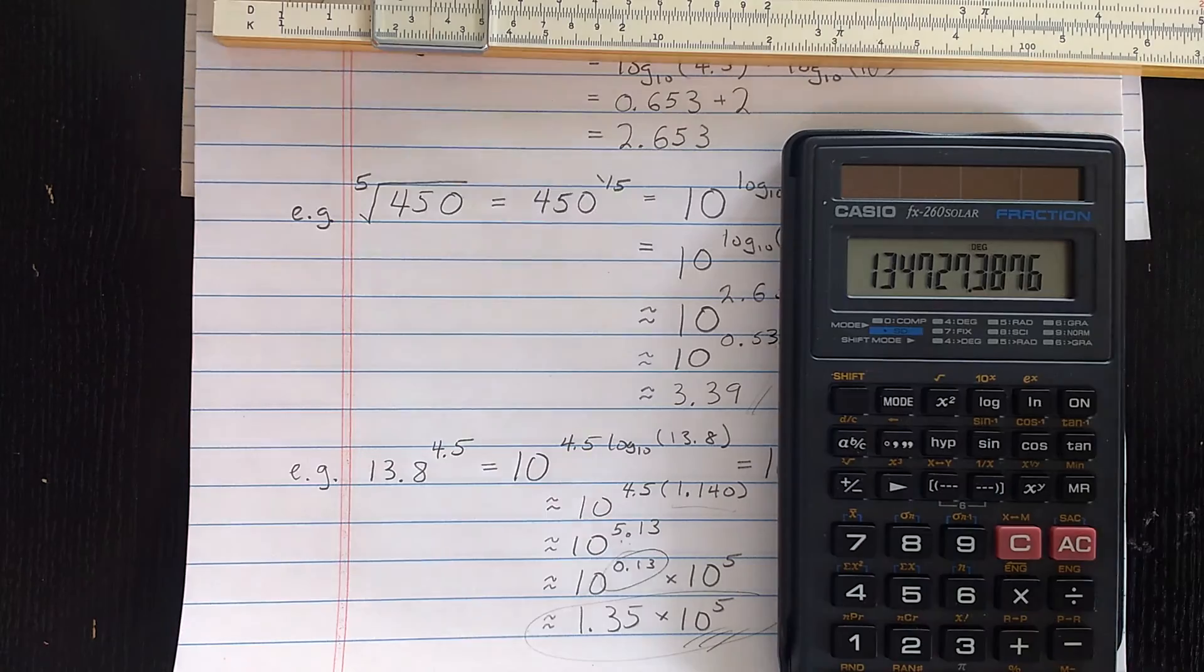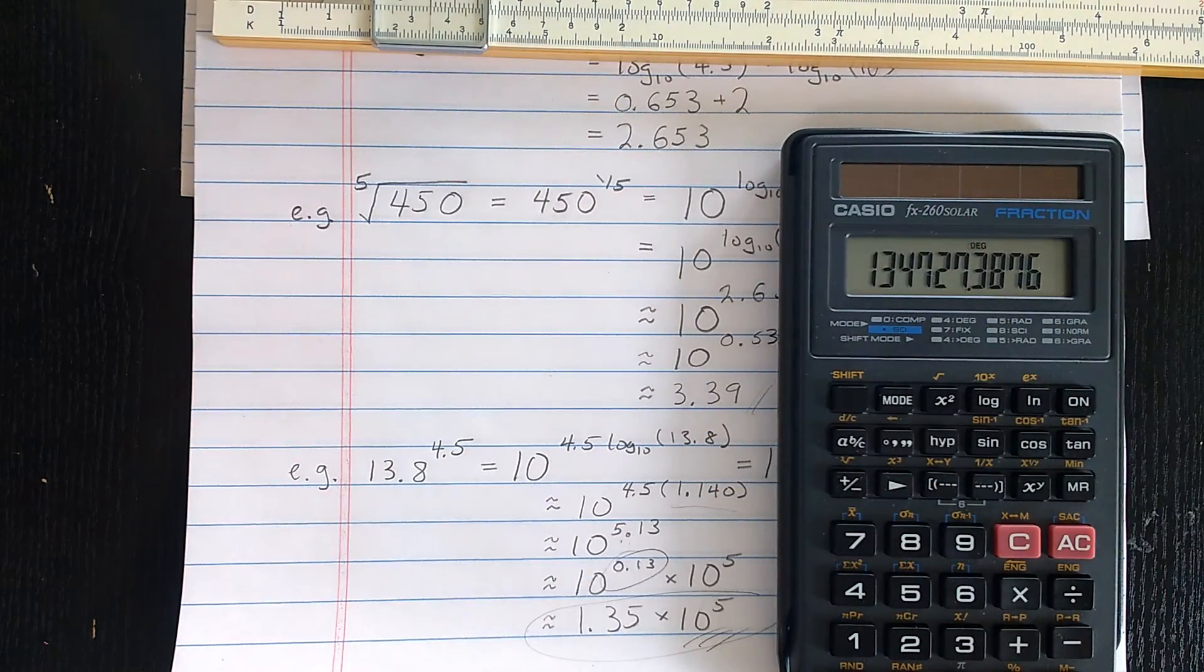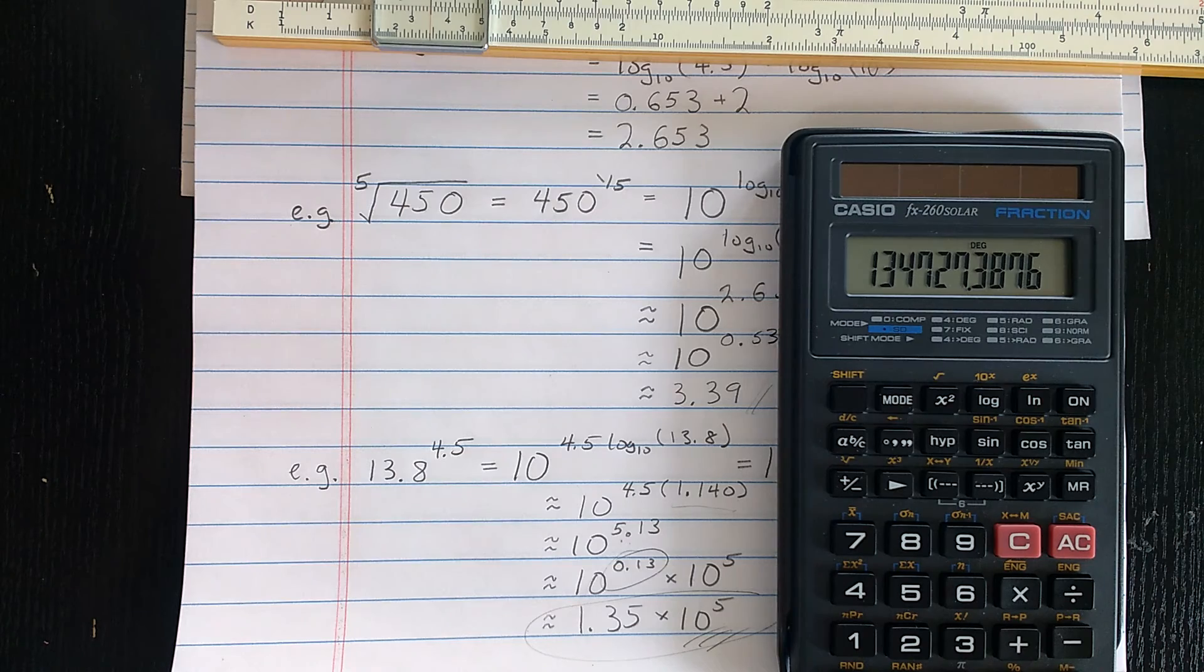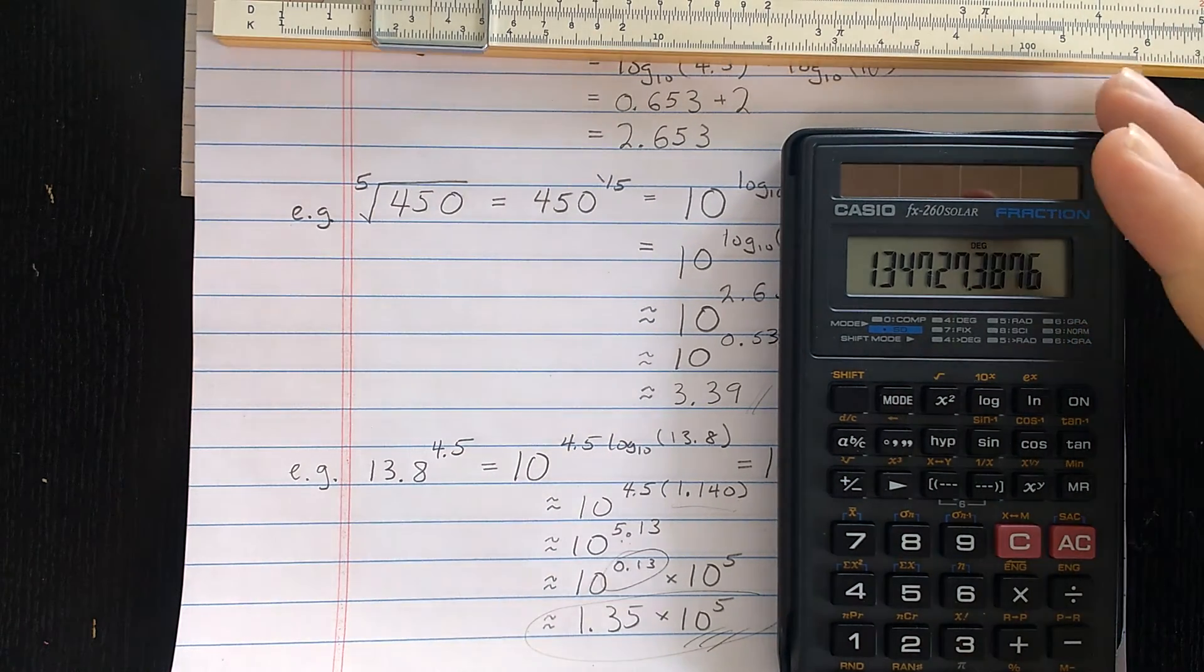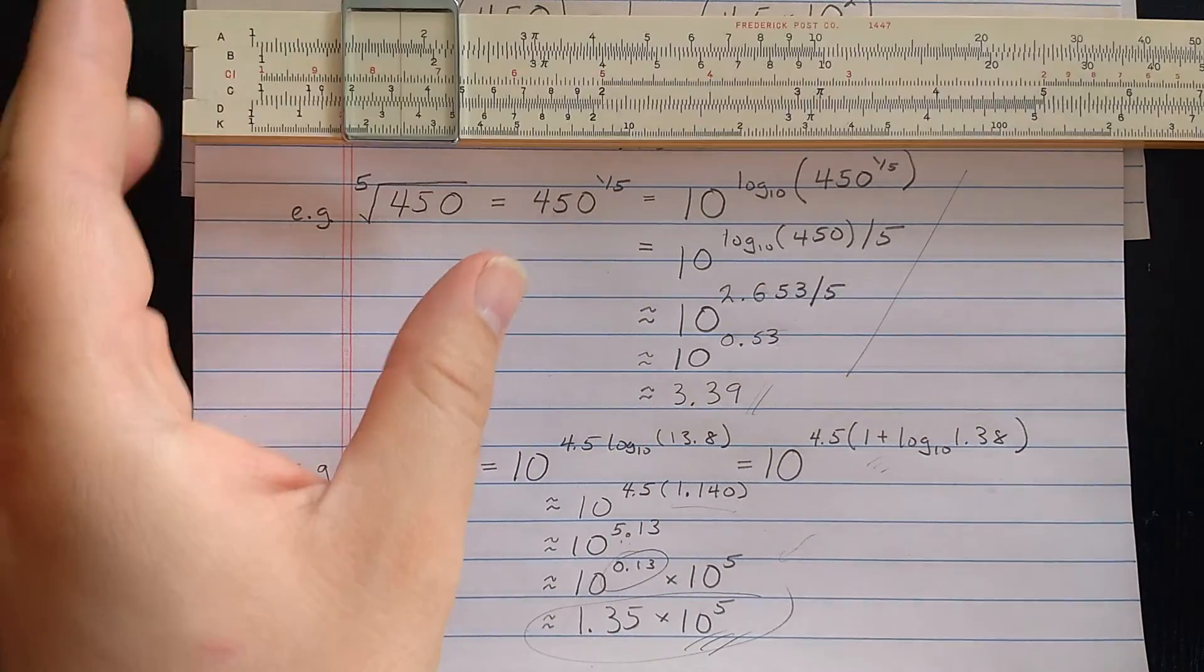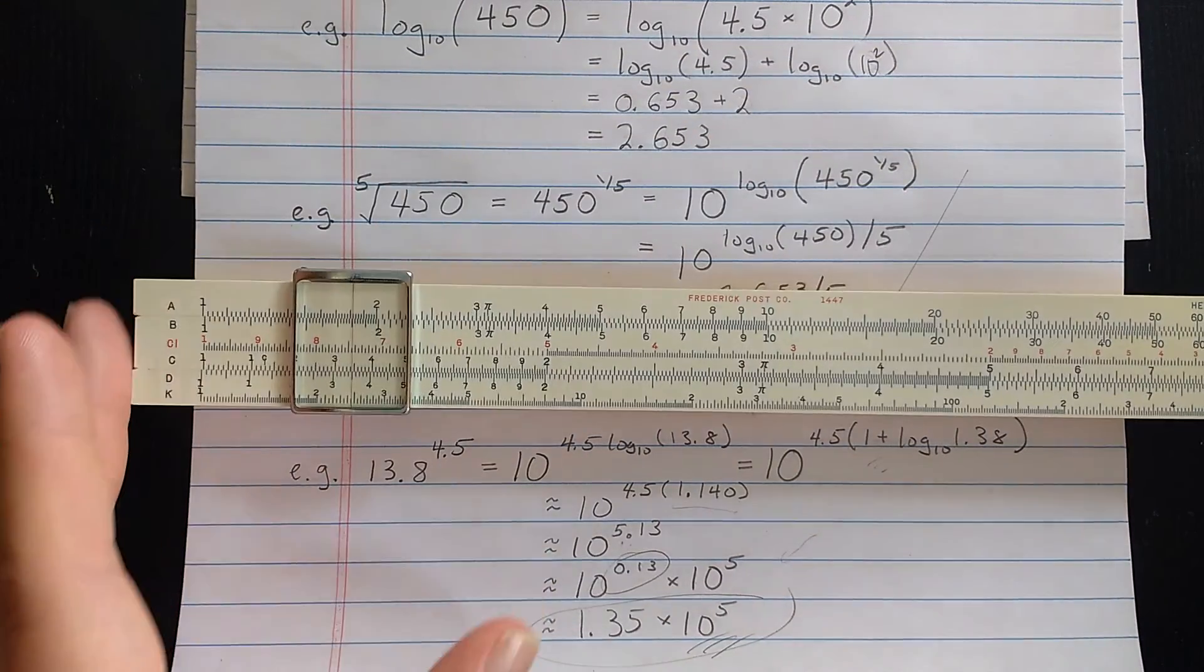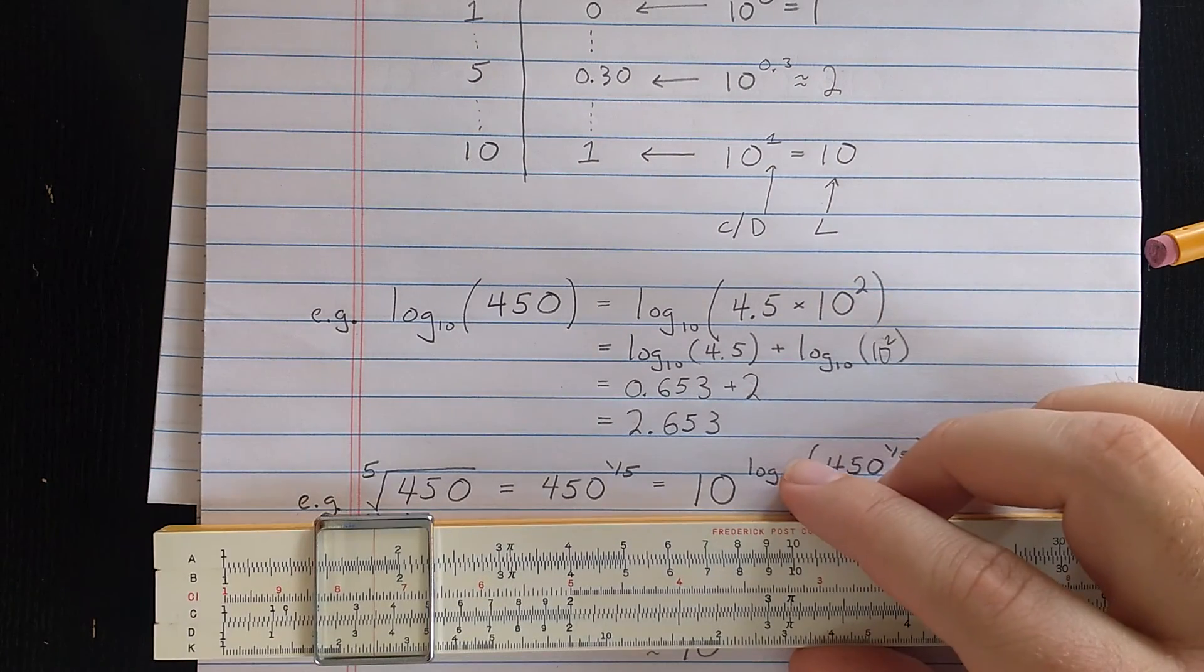One thing you can notice now is that this number is so big, it's not on the log-log scale of most scientific slide rules. So to do this calculation, you're going to have to do either this sort of thing, which I just did, or there are ways you can compute it with the log-log scales, essentially using a similar trick. So I hope now you understand the purpose of the L scale on your slide rule and how to use it.